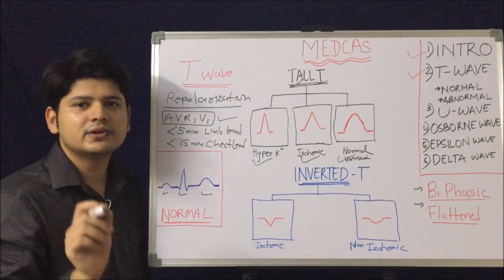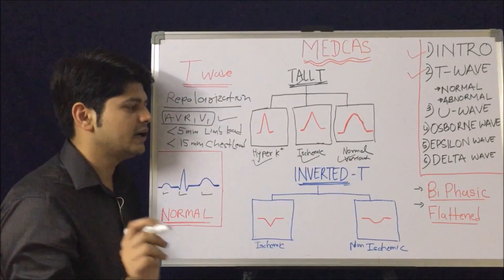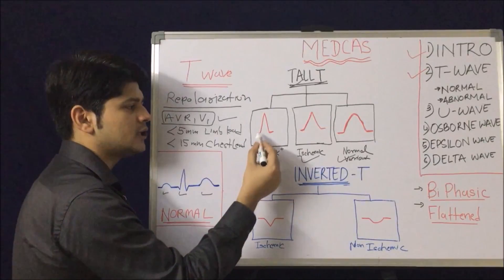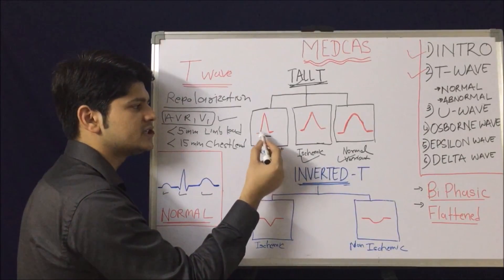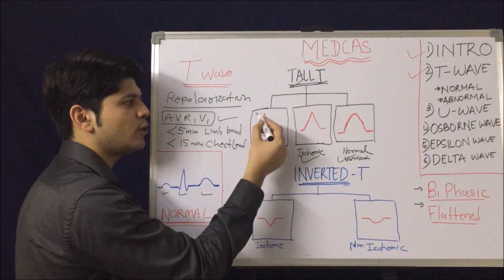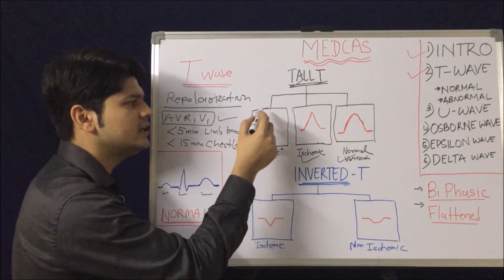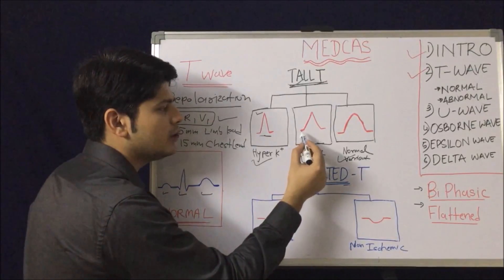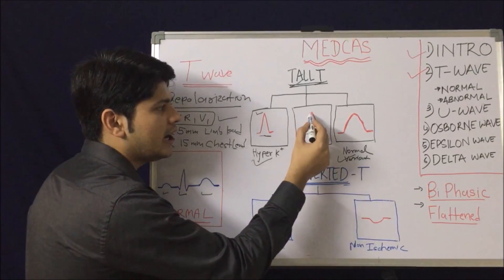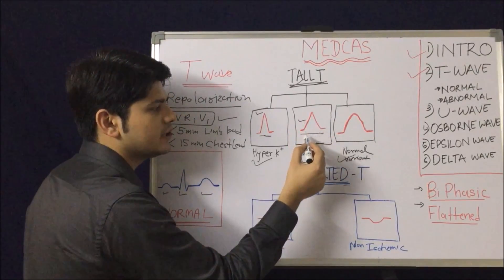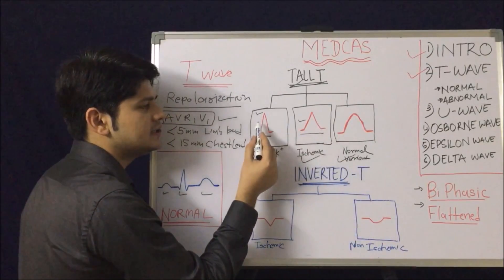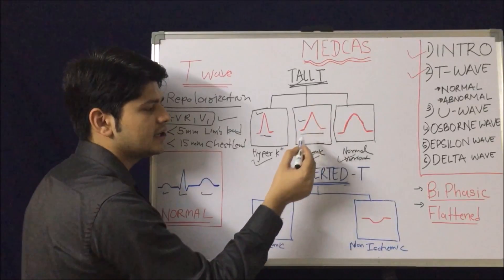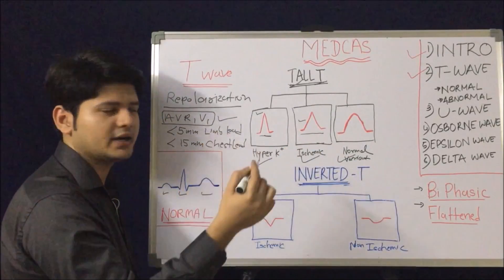Now, to be specific on the ECG, let's differentiate one by one. In hyperkalemia, the tall T wave will be narrow-based, symmetrical, and pointed. In ischemia or hyperacute MI, you have a broad-based, pointed, and symmetrical T wave — broad-based but not as sharply pointed as in hyperkalemia.